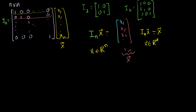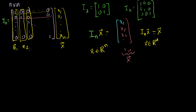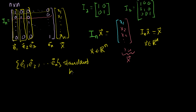The columns of the identity matrix have a special name. If we call this first column E1, the second column E2, the third column E3, and we go all the way to En, these column vectors — the set E1, E2, all the way to En — this is called the standard basis for Rn.